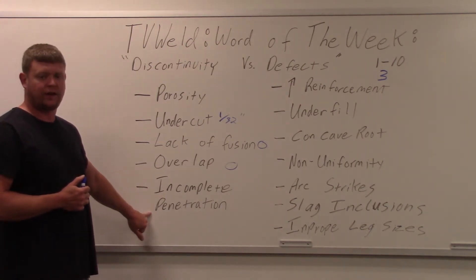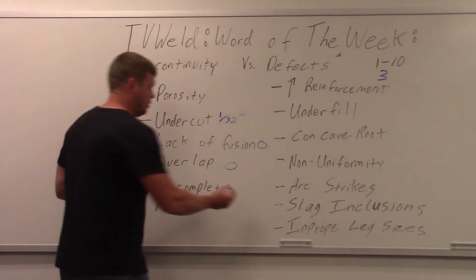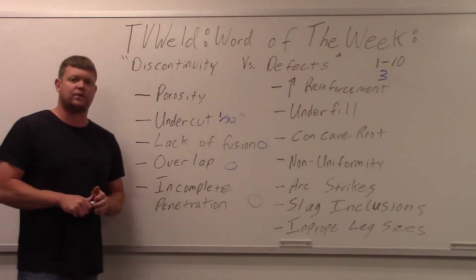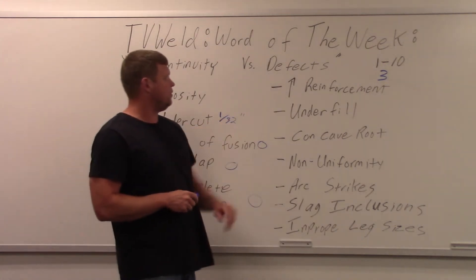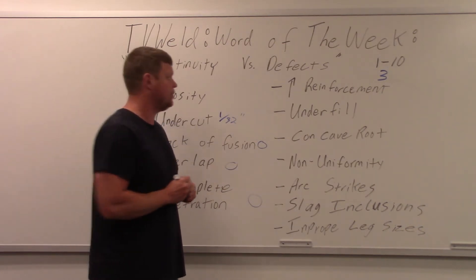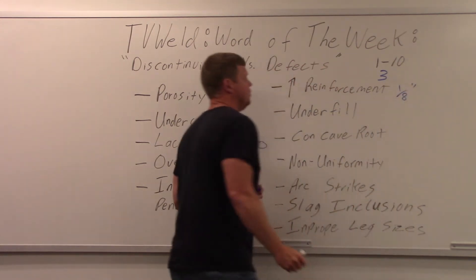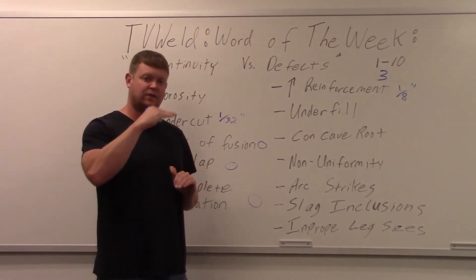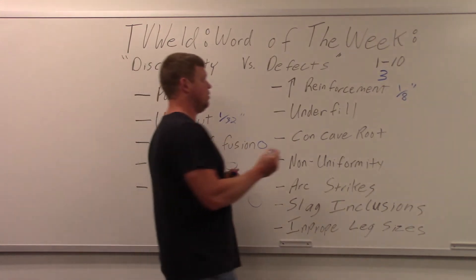Incomplete penetration — this can apply to a fillet or a groove joint. On a fillet, they'll cut it through a macro etch, and if it's not all the way in, it's an automatic defect. Same with groove welds — any lack of penetration is a rejectable part. Excessive reinforcement on the face of a groove joint: you're allowed an eighth of an inch. Below an eighth of an inch it's a discontinuity; above an eighth of an inch it becomes a defect.